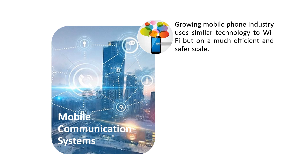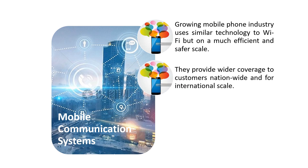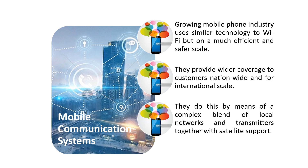The next type is mobile communication systems — wireless mobile communication. This provides wider coverage to customers nationwide and on an international scale. They do this by means of a complex blend of local networks and transmitters together with satellite support. This combination provides a much more efficient and safer large-scale network.